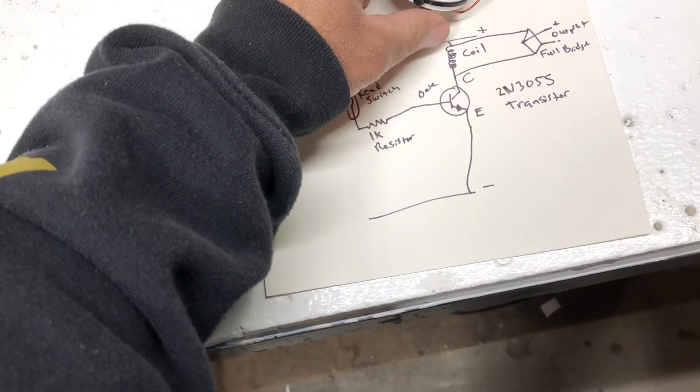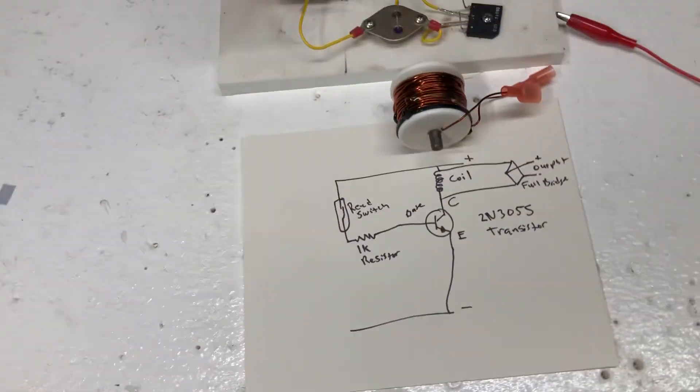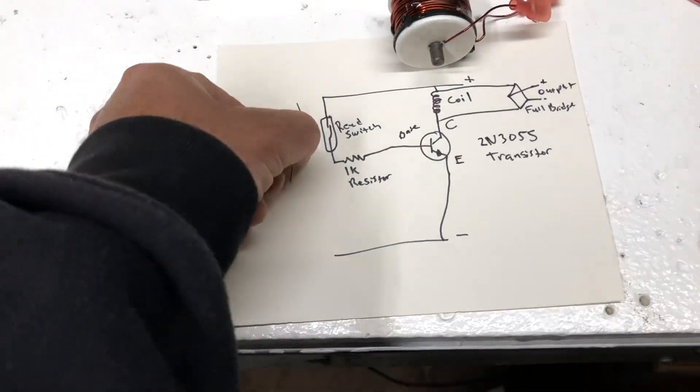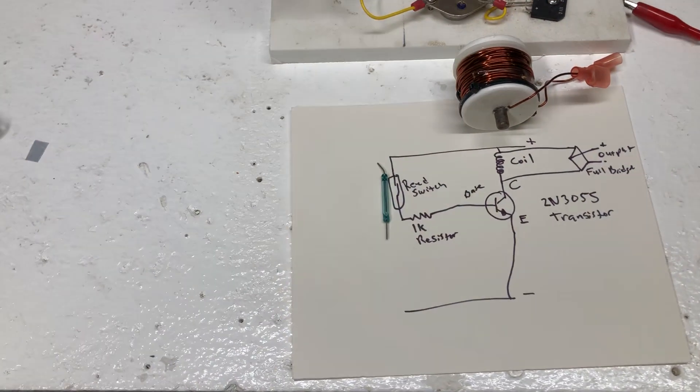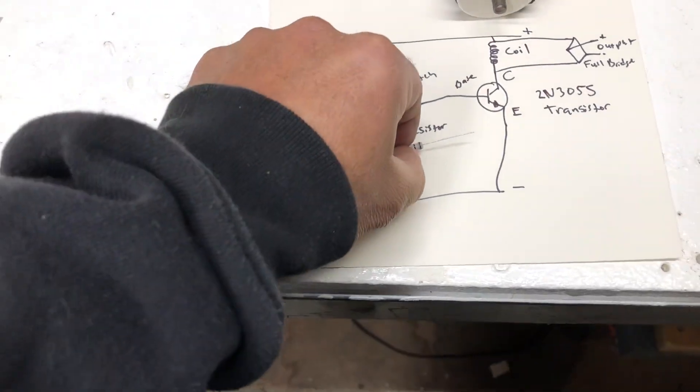So the coil right here on top. Let's go down the circuit here. Here's a reed switch and then a 1k resistor.